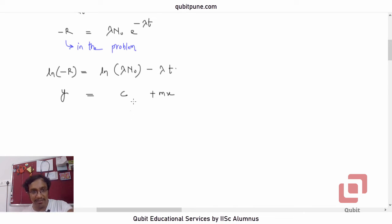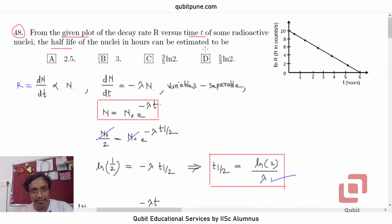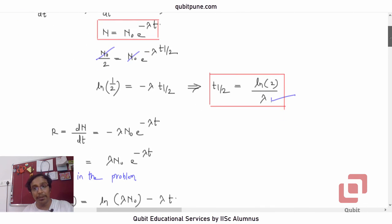Now, out of these two things, lambda and N naught, what are we looking at? We are looking for lambda because in the problem they have asked us to determine the half-life.